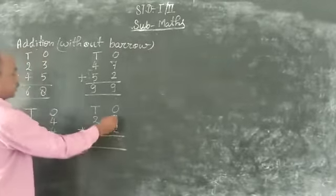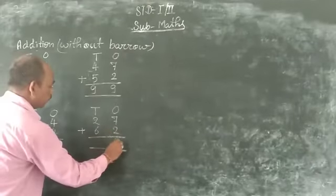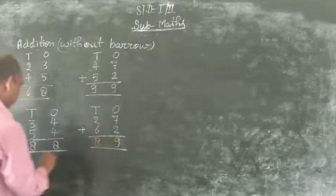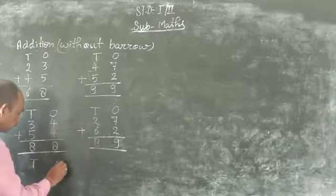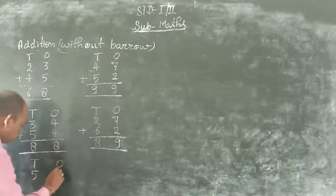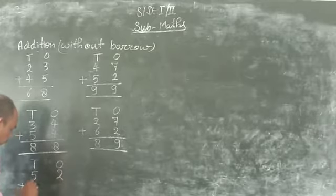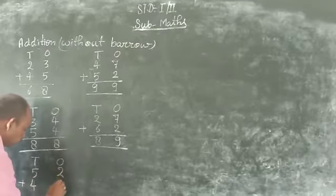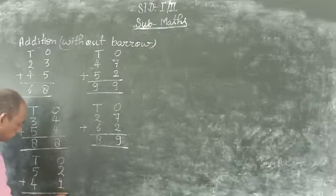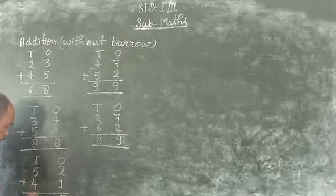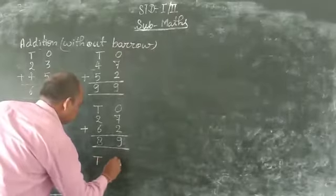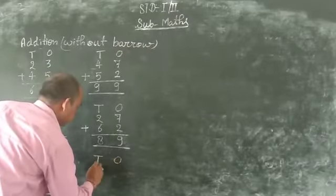Addition: 18, 19. 2 plus 6 is 8. 9, 10, 1. 52 plus 41. 2 plus 1 is 3, 5 plus 4 is 9. 9, 10, 1. 30.